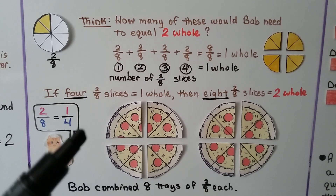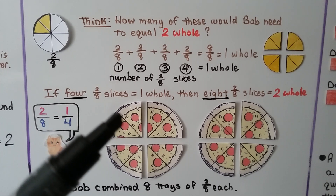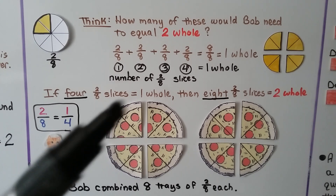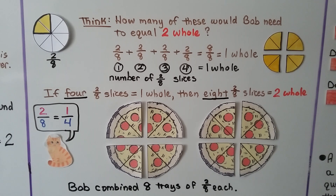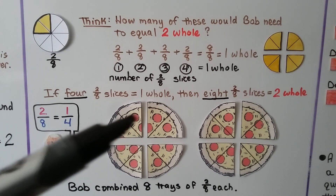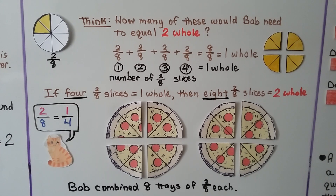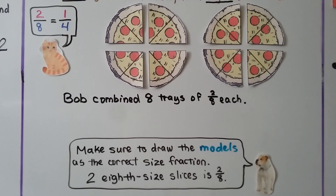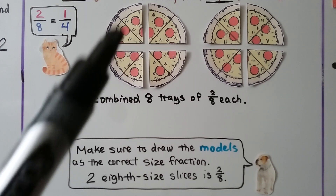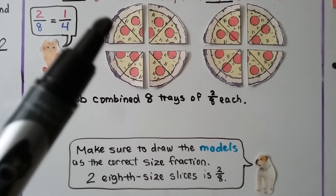The problem stated he had several trays each with a 2/8-size slice, and he wanted to combine them to make whole pizzas. Also note that 2/8 is an equivalent fraction for 1/4 of the pizza. You need to make sure that you draw the models as the correct size fraction — 2/8 size slices means 2 of 8 parts.